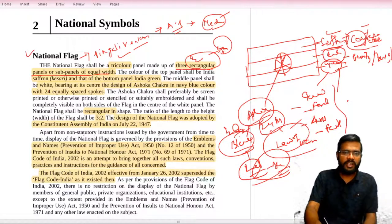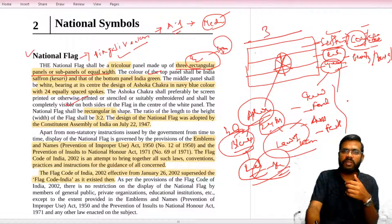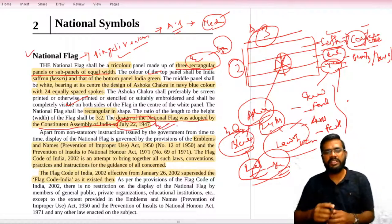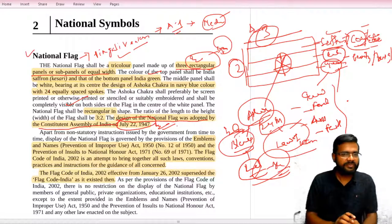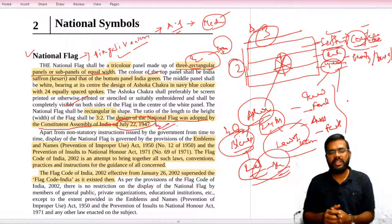The shape of the flag is three to two. If the length is three, then breadth will be two. Remember this. The design of the national flag was adopted by the Constituent Assembly of India on 22nd July 1947. It is very very important because in many examinations this date has been asked: 22nd July 1947 is the date on which the national flag was adopted by the Constituent Assembly of India when we were preparing our Constitution.